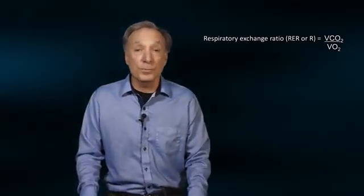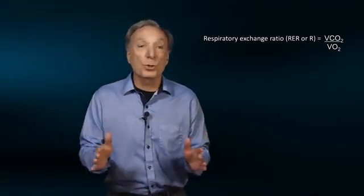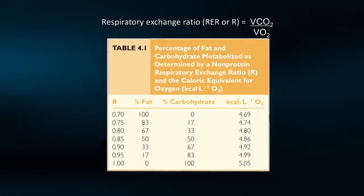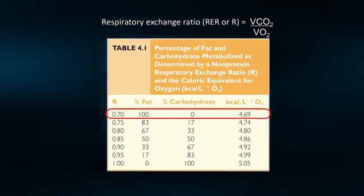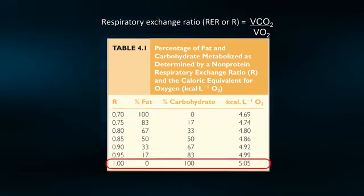This ratio is very useful as it provides valuable information on the type of fuel or substrate being used by the muscles during exercise. For example, if you are burning pure fat, your respiratory exchange ratio will be 0.70. If you are burning pure carbohydrate, your respiratory exchange ratio will be 1.0.